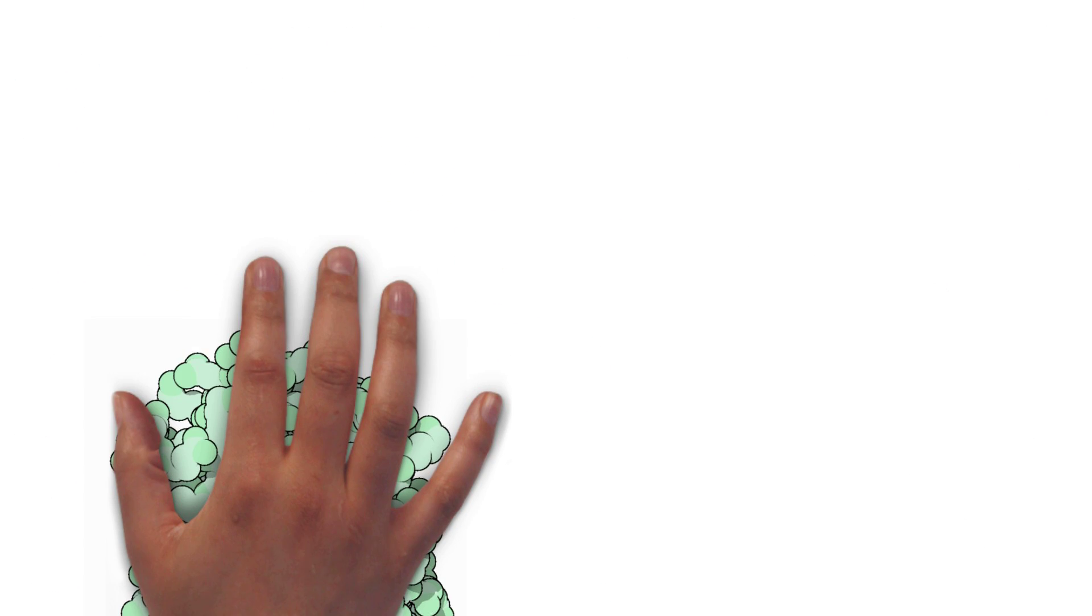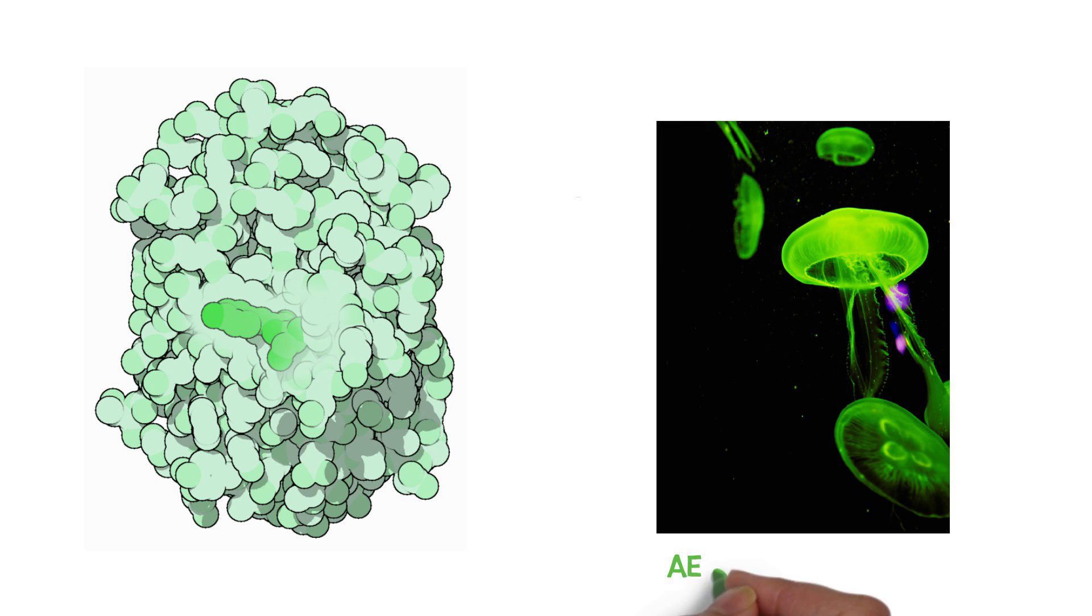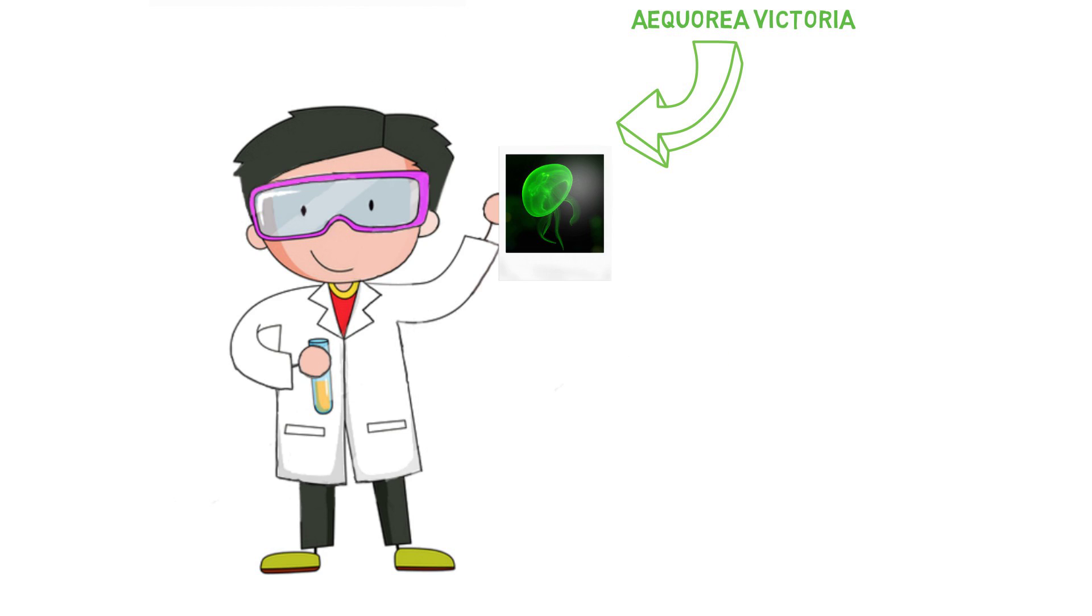This protein doesn't come from fireflies, but jellyfish, specifically a species called Aequorea victoria, which glows green under UV light. It was first discovered by scientist Dr. Shimomura, who tried to isolate the bioluminescent protein in the jellyfish.